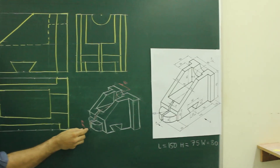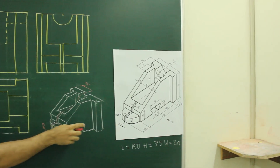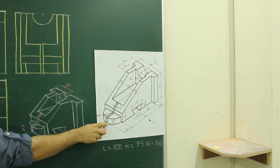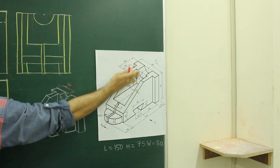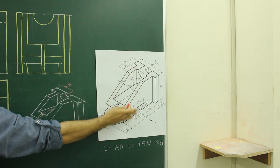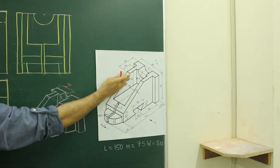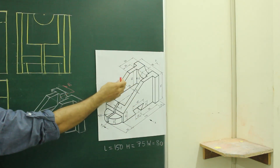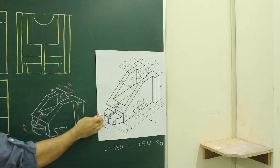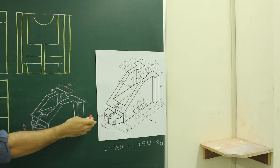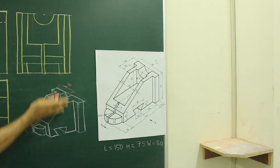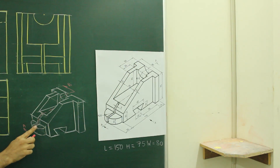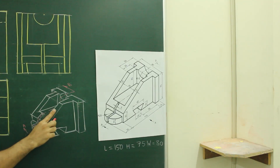Now we will draw the sectional front view along AB. If you see, this cut plane line is passing through the middle of the object like this along AB. So what we will do is cut this object — we imagine if you cut this object, how it will look — and we will remove this portion.